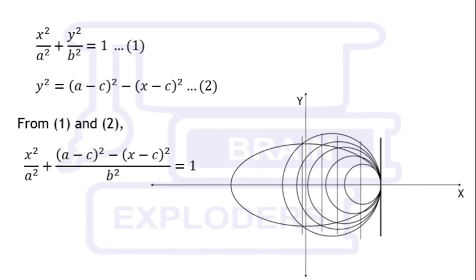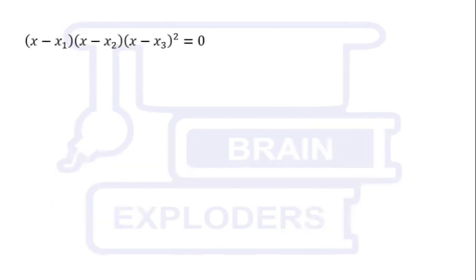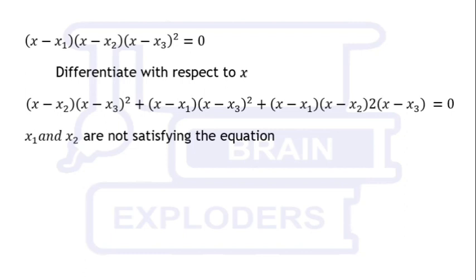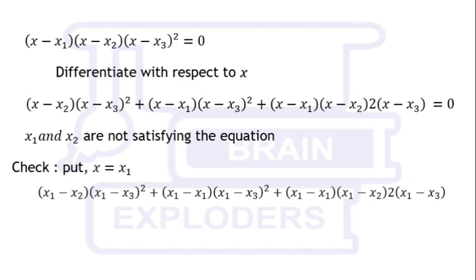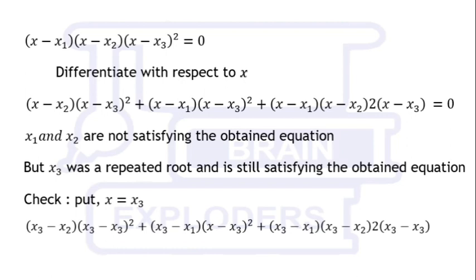This quadratic equation has equal roots because both values of x equal a. To understand repeated roots: suppose (x − x₁)(x − x₂)(x − x₃)² = 0 is an equation where x₃ is a repeated root. If we differentiate with respect to x, we get an equation of one less degree. x₁ and x₂ do not satisfy this new equation, but x₃ still satisfies it — putting x = x₃ gives the left-hand side equal to zero.